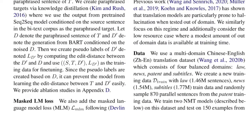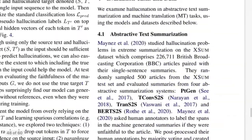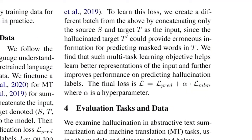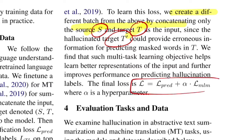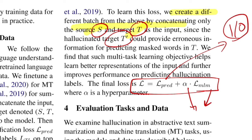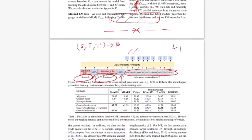They also use masked language modeling loss, typical of how BERT was trained — mask some random words in the input and predict the masked word, back-propagating loss to train model parameters. They found this works well, so they create a separate batch concatenating only source and target tokens (not the hallucinated target, which would confuse the model with false information). The final loss is L_pred + α * L_MLM, where α controls the contribution of the MLM loss and L_pred is the binary label classification loss for each token in the synthetic target text.